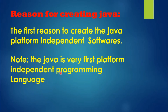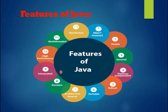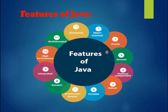Java is a platform-independent programming language. The features of Java include: object-oriented, simple, secure, robust, portable, architecture-neutral, dynamic, high-performance, multi-threaded, and well-distributed.